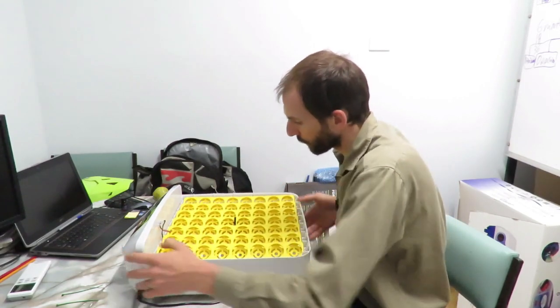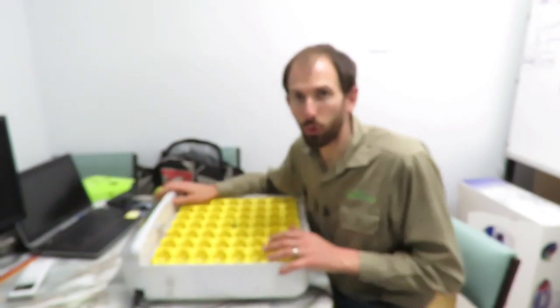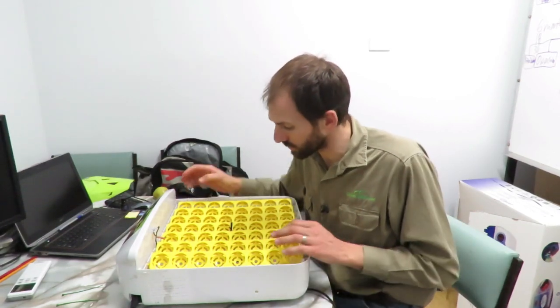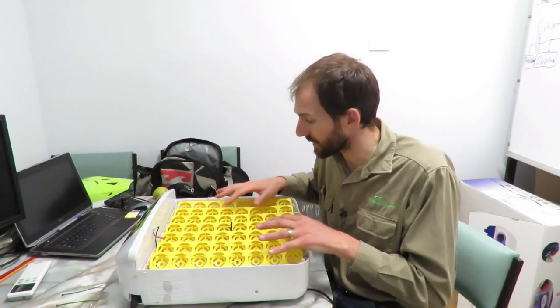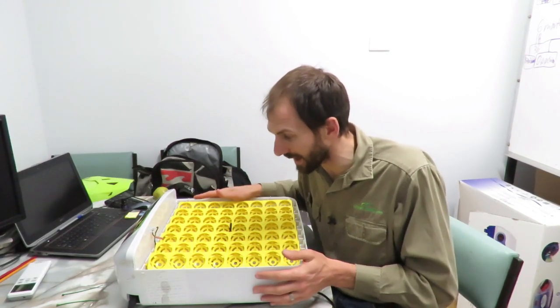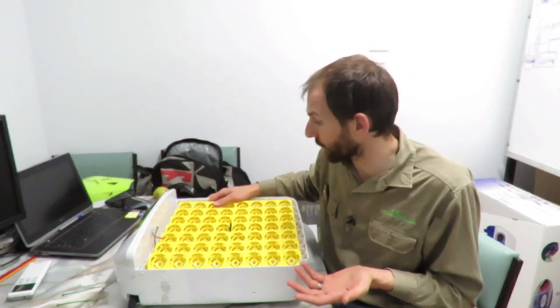So firstly, the actual auto turner, this is very similar to the Borotto that I just showed you, obviously you can only put chicken eggs in, like the Borotto, you can't put quail and goose eggs in, it's not made for that. This one holds 56 eggs, so the egg capacity is great, the actual turning of the eggs and the way that mechanism works, I think it's good, I think that's fine.